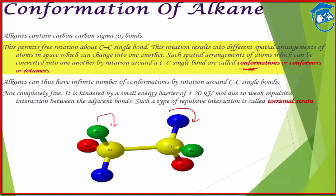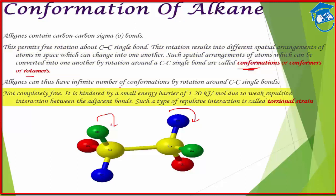These different configurations give different conformers, and this phenomenon is known as conformation. Conformers are also known as rotamers because they are formed by rotation. We should note that conformers are different from isomers. In isomers — like cis-trans — they have independent structures and are restricted, whereas conformers rotate freely. Any alkane can have an infinite number of conformations.